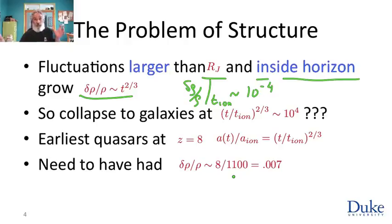How long will this take? We need to get to δρ/ρ of order one starting at t-ionization with δρ/ρ of order 10⁻⁴. This will happen at a time relative to t-ionization where (t/tᵢₒₙ)^(2/3) is about 10,000. This is a problem because t-ionization is 380,000 years. This leads to a few hundred billion years.